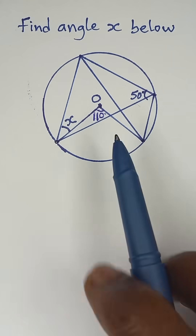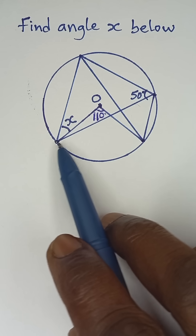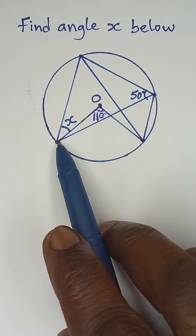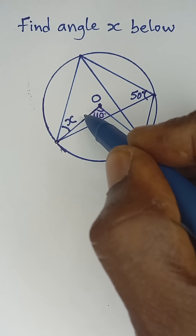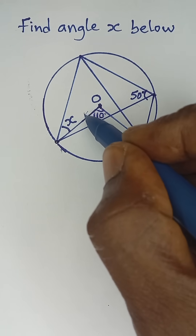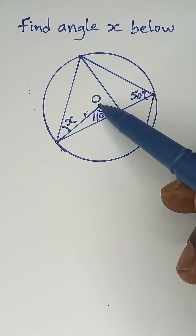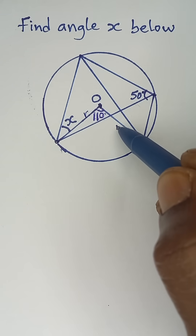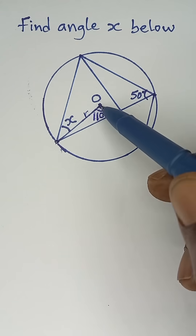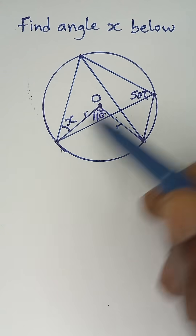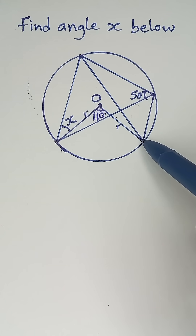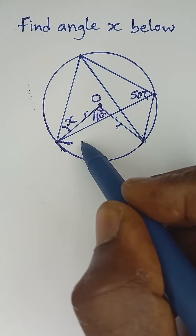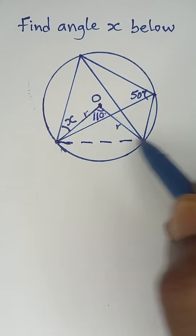Find angle X below. Looking at this triangle, we can see that the line from the center of the circle to the circumference is a radius, and another line from the center to the circumference is also a radius. So these two lines are equal, which shows that this triangle is an isosceles triangle, meaning we can obtain the base angles.